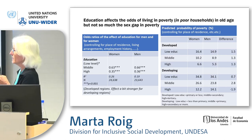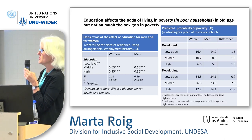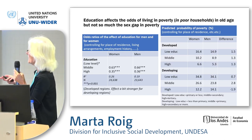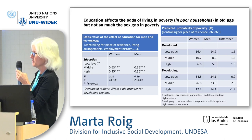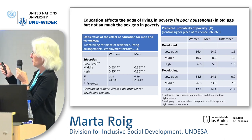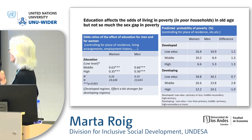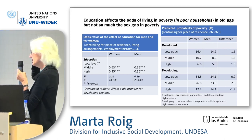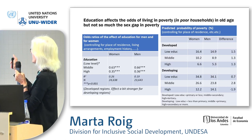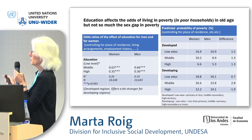The report looks at the effect of many variables in explaining old-age poverty. Education has a significant impact on the odds of living in poverty for both men and women, controlling for place of residence, living arrangements, and employment history, in both developed and developing countries. However, education does not have such a significant impact in explaining the gender gap in poverty — women's disadvantage remains even when we adjust for education.